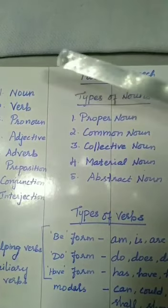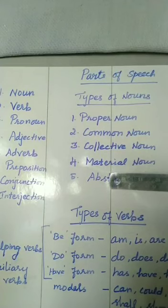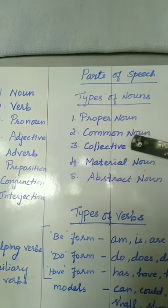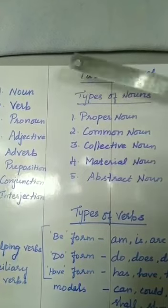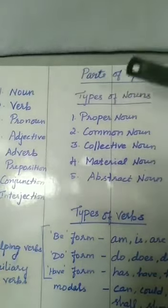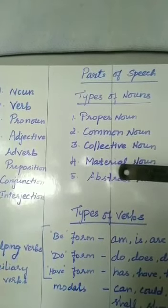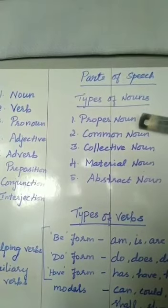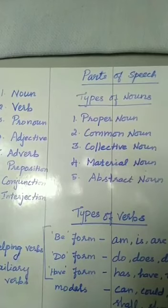We have 5 types of nouns. What are the 5 types of nouns? Proper noun, common noun, collective noun, material noun, and abstract noun.